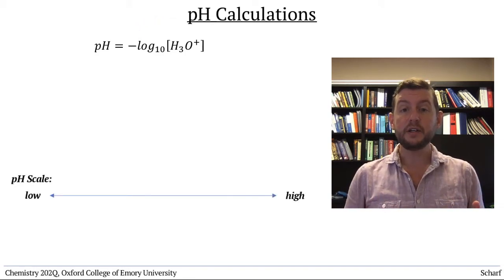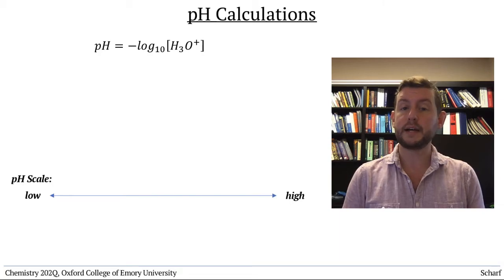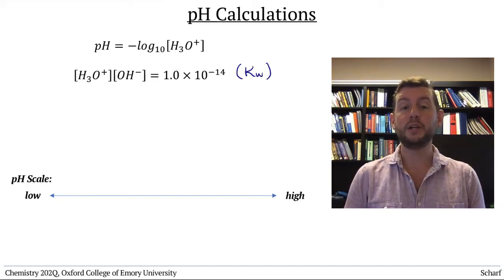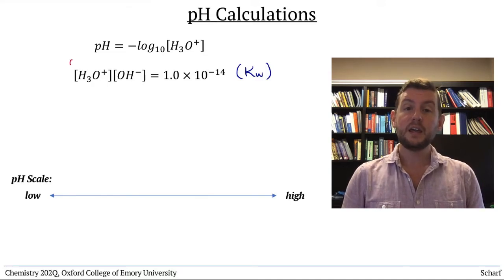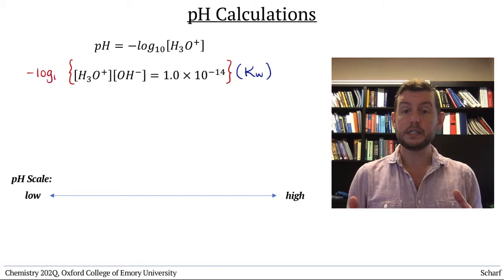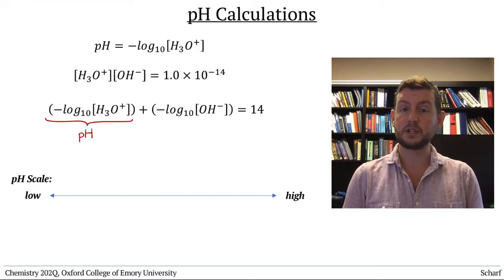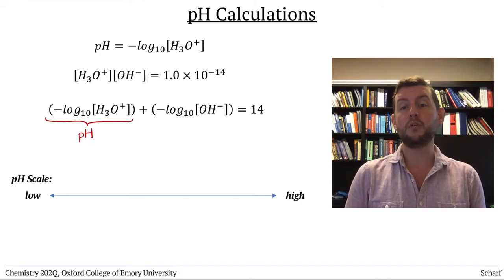The pH scale is based on a principle introduced in the last video, that the concentration of H3O+ times the concentration of OH- is equal to Kw, 1.0 times 10 to the minus 14, in any aqueous solution. If we take the negative log of both sides, we see that the pH plus the negative log base 10 of the OH- concentration must always equal 14.